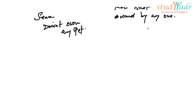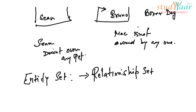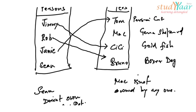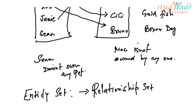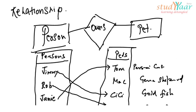Just like we had an entity set, we have a relationship set. It is the set of all relationships which have a common relationship type — in this case, that relationship type is a person owning a pet. Relationship is represented by a diamond shape, like 'owns' is a relationship represented by a diamond.